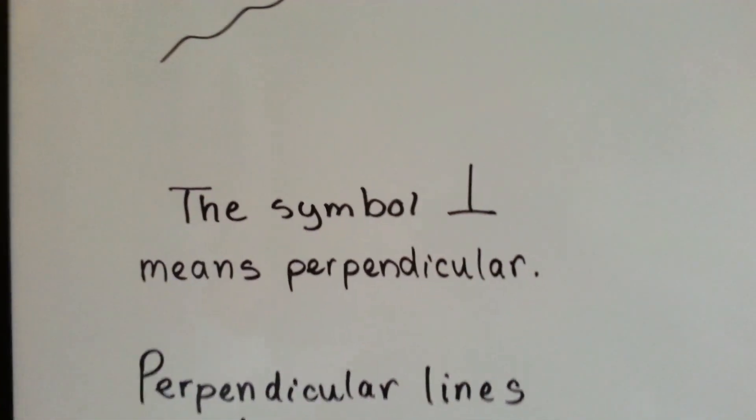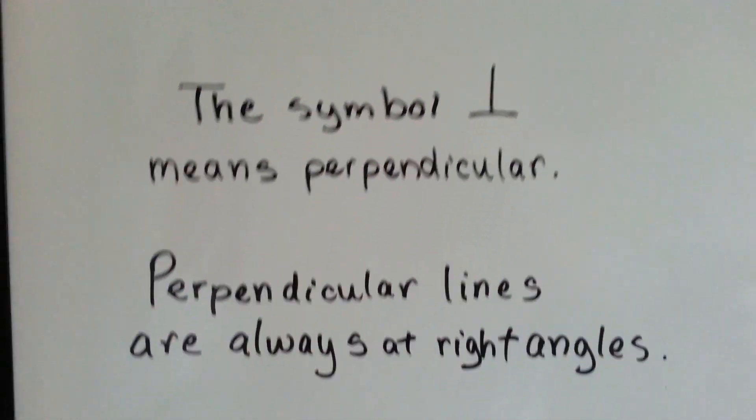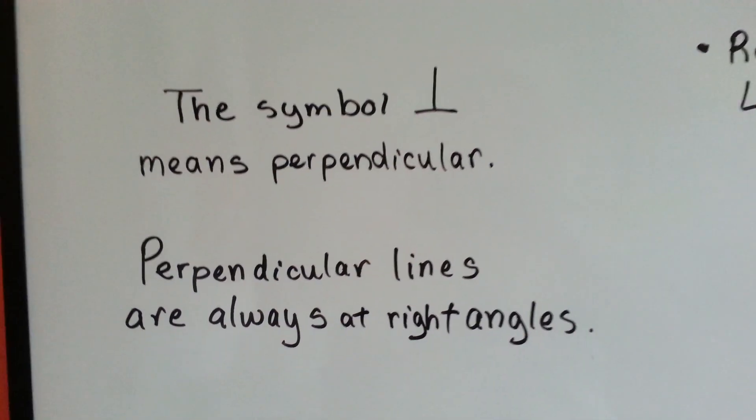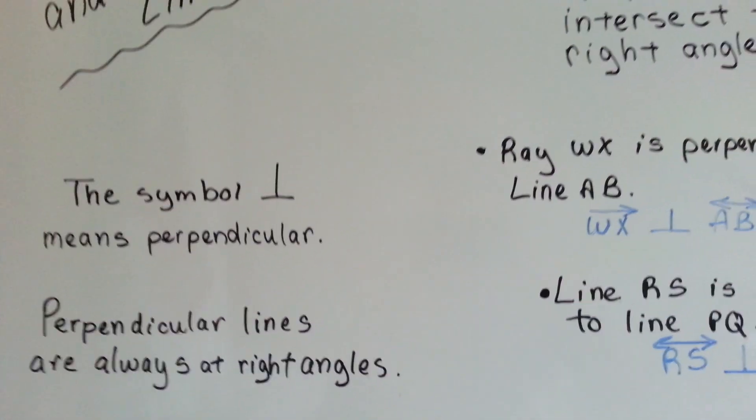The symbol with a little line, with a line going straight up, means perpendicular. Perpendicular lines are always at right angles. They're always box shaped, square shaped.